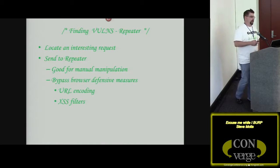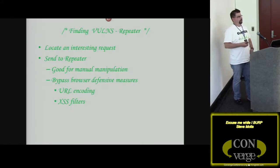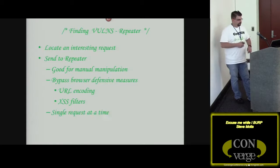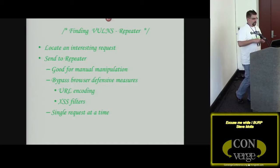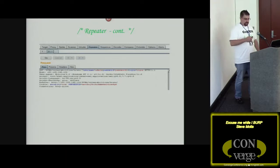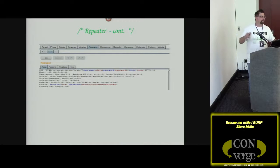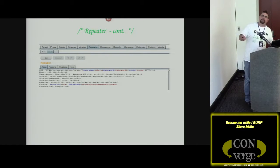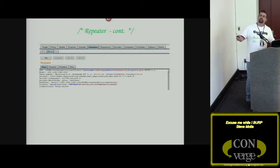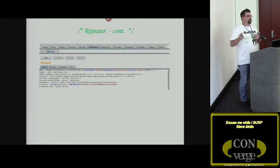Burp also bypasses browser defensive measures — that's another reason to use it. For encoding and cross-site scripting filters, because Burp sits on the other side of the browser, you can bypass all of that without worrying about those security measures. Repeater is single request at a time, so if you're in an engagement you'll use it a few times then move to Intruder to get things going quicker. Burp is smart about identifying potential insertion points in a web form — it color-codes variables it believes can be manipulated, highlighting cookies, security items, username, and password fields in blue.